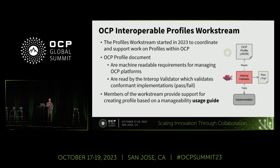Profiles are written in JSON. The DMTF has implemented a validator which consumes the profile, auto-generates the tests, and runs them against a conformant implementation, then issues a pass-fail. This is all open source owned by DMTF. The OCP profile website names all three validators implemented for Redfish: one for interop to ensure you have all the required resources and properties, one to validate the protocol, and one to validate services. By running all three, you are basically fully conformant to the Redfish standard.